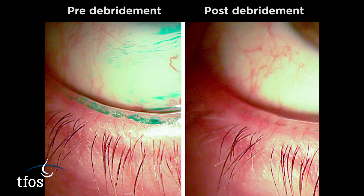Removal of excess keratinisation from the lid margin by debridement can improve the flow of oils, enhancing the tear film lipid layer and stability.